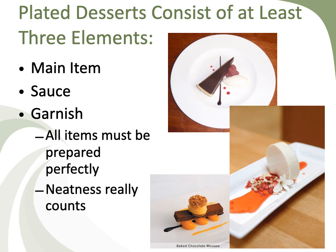Neatness really counts. There's nothing worse than seeing a big thumbprint on a plate, or something that got gouged, damaged, or beat up in the process of plating. If it looks sloppy, people figure it must have been made sloppy, and if the plating is sloppy then the whole kitchen might be sloppy — that could mean a sanitation problem. We really have to think about these things as we put things together, because people judge us based on our neatness and attention to detail.